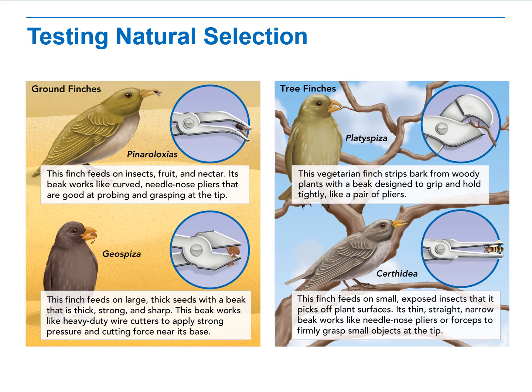When Darwin first saw the Galapagos finches, he thought they were wrens, warblers, and blackbirds because they looked so different from one another. Once he learned they were all finches, he hypothesized they had descended from a common ancestor. Darwin noted that several finch species have beaks of very different sizes and shapes, each used like a specialized tool to handle different food. He proposed that natural selection had shaped the beaks of different populations as they became adapted to eat different foods.